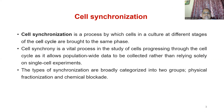Cell synchronization is a process whereby cells in a culture at different stages of the cell cycle are brought to the same phase. It is a vital process and we can study how cells progress through the cell cycle. This type of cell synchronization can be categorized into two groups: physical fractionation and chemical blockade.